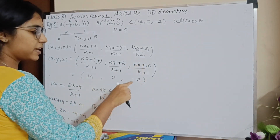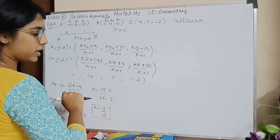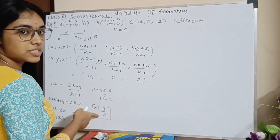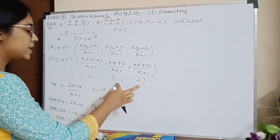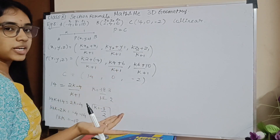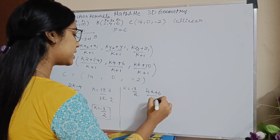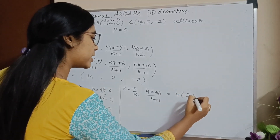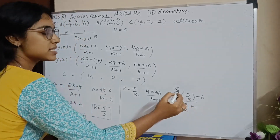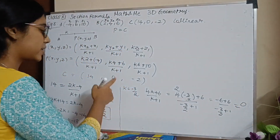Now let me substitute K into the Y and Z coordinates to see if I get 0 and minus 2 respectively. Substituting K equals minus 3 by 2 into 4K plus 6, divided by K plus 1: 4 times minus 3 by 2 plus 6, divided by minus 3 by 2 plus 1. This gives minus 6 plus 6 divided by the denominator, which is 0. So I have got my Y coordinate as 0.